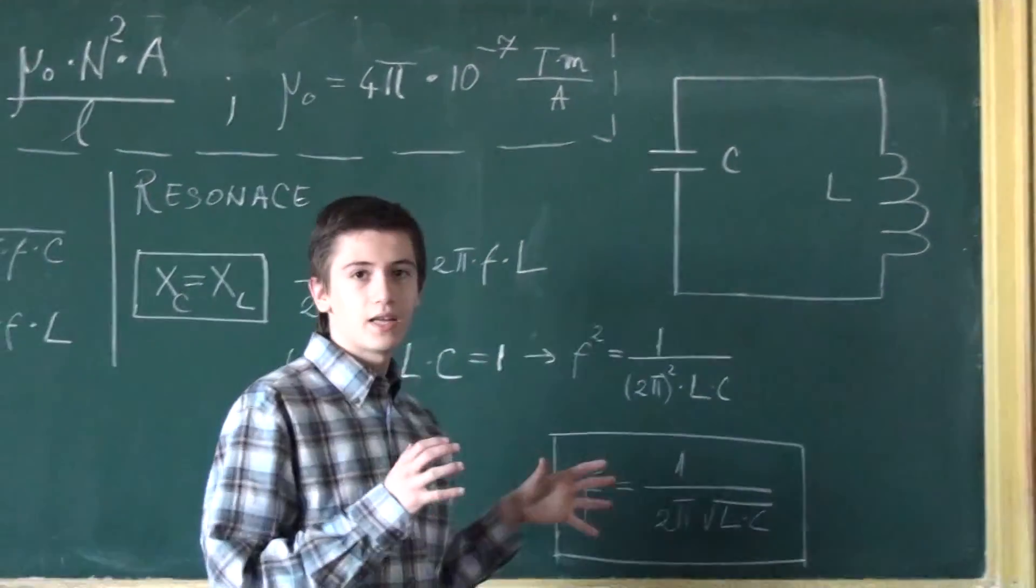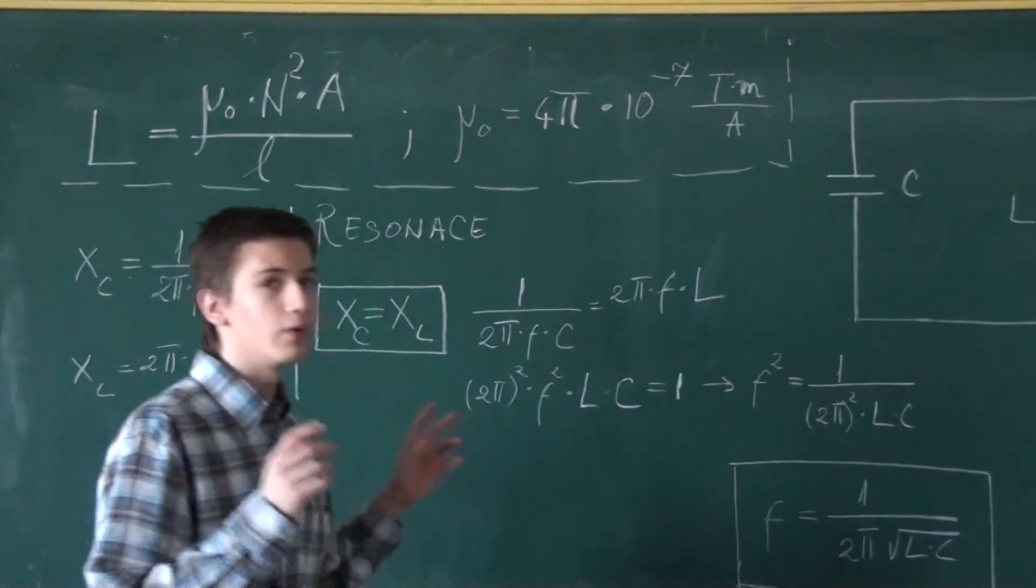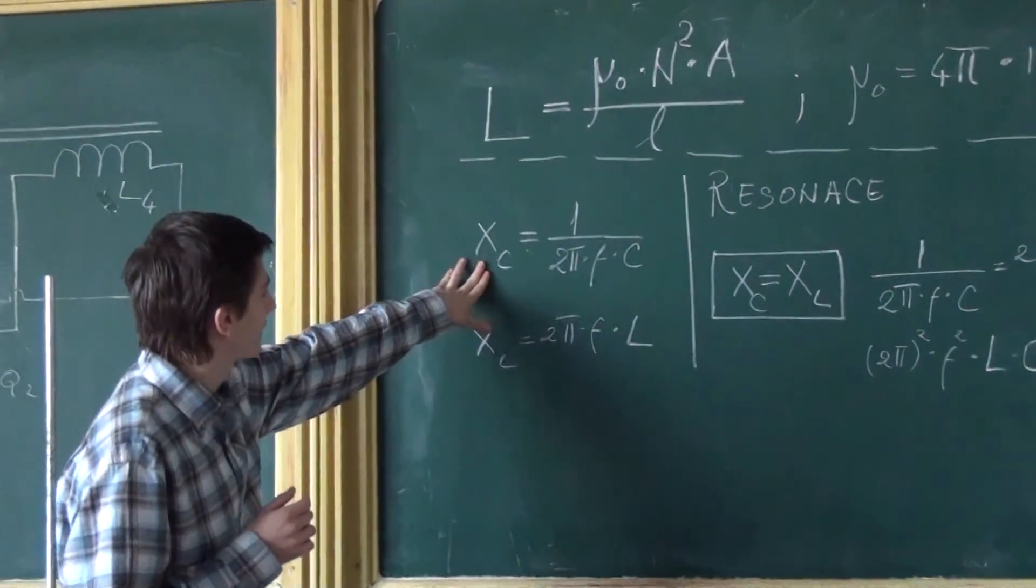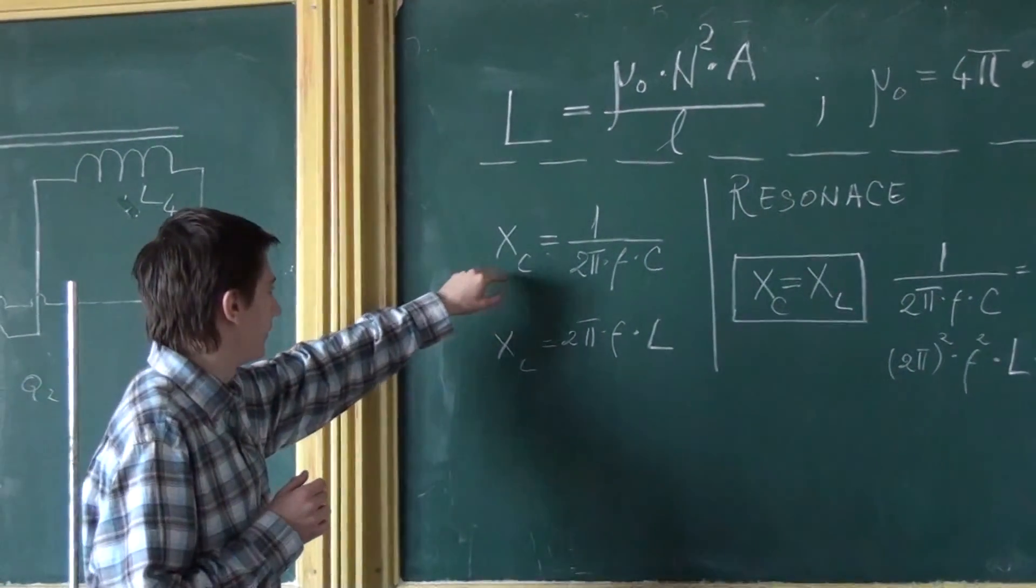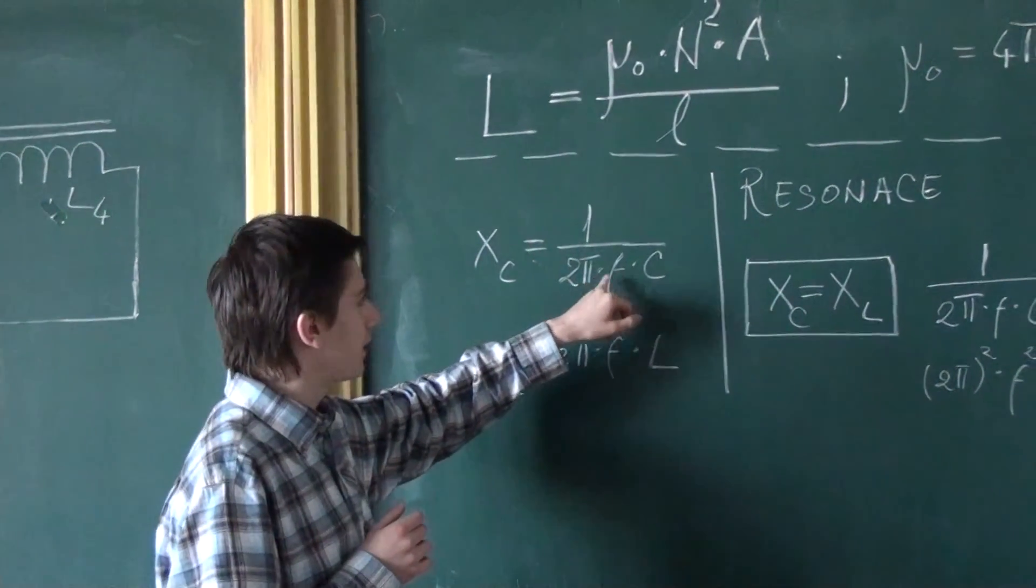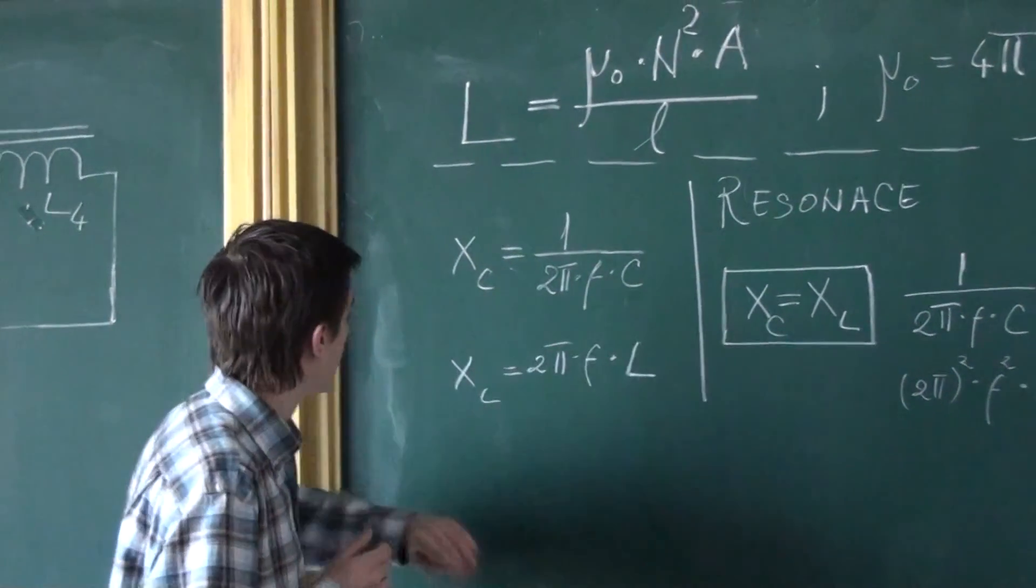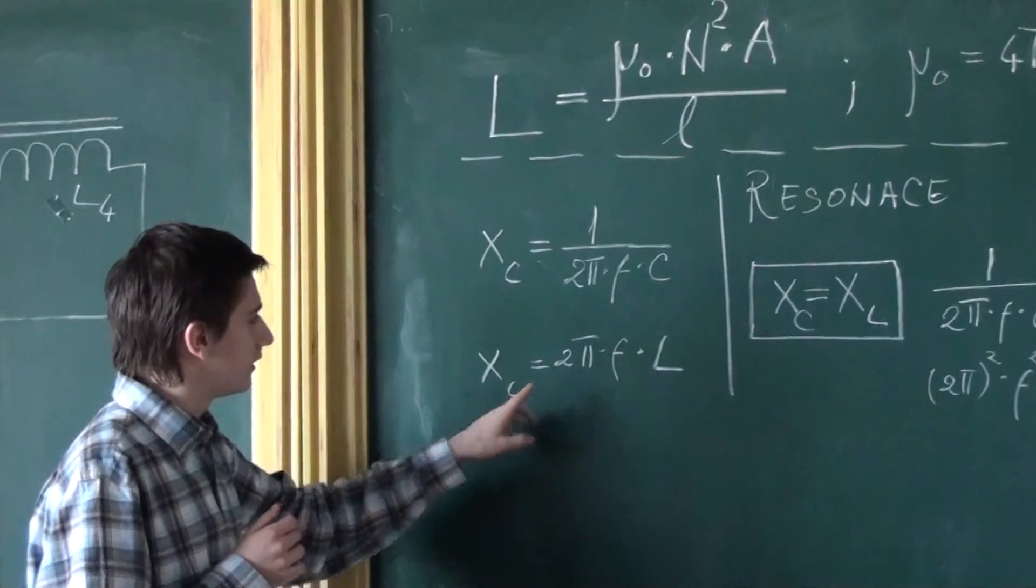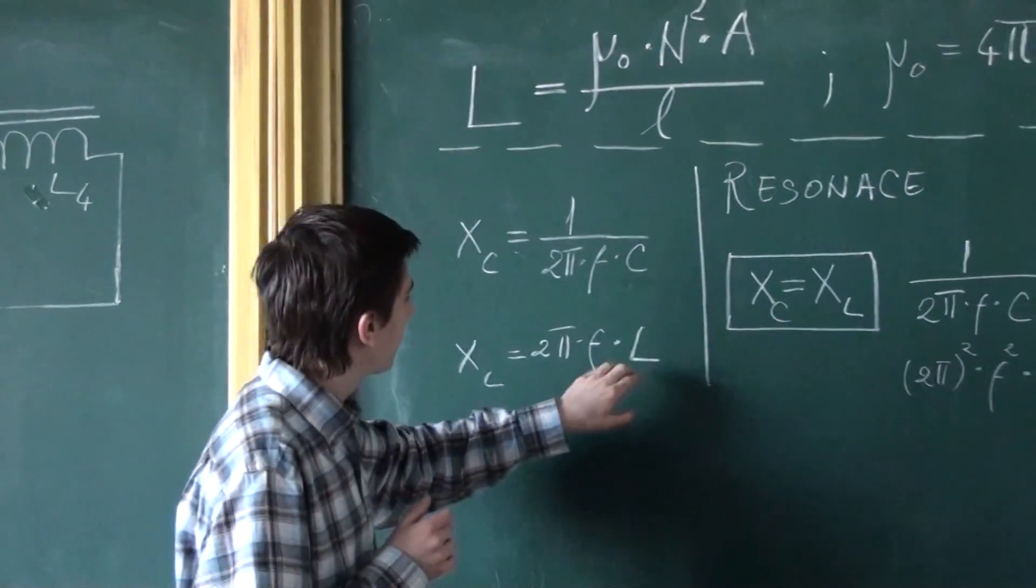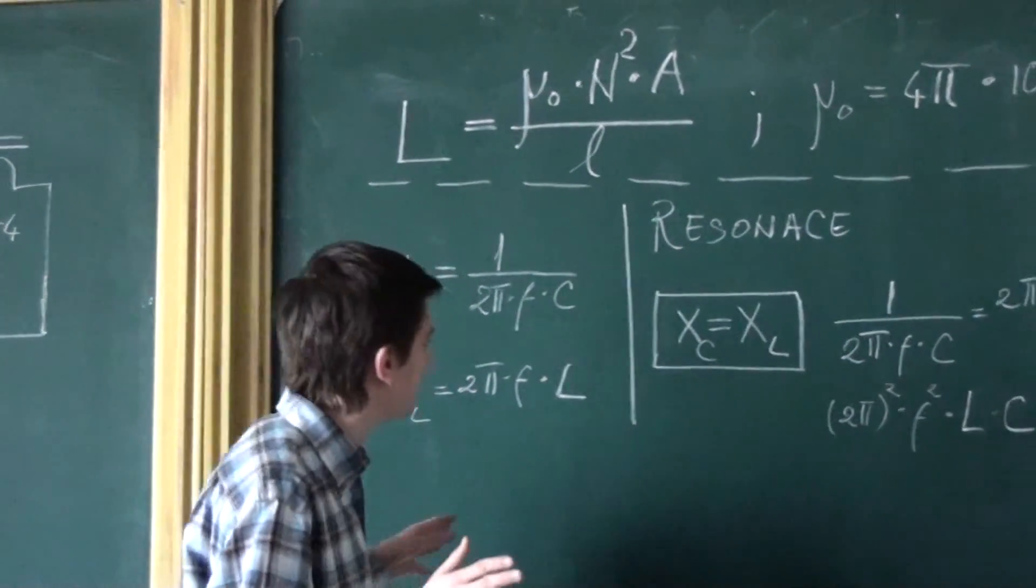We know that the capacitor has a capacitive reactance and the inductor an inductive reactance, which both of them are given by the following formulas. The capacitive reactance, noted by me with Xc, is 1 over 2π multiplied by frequency and by capacitance measured in Farad. And the inductive reactance is 2π multiplied by frequency multiplied by L, which is inductance measured in henries.